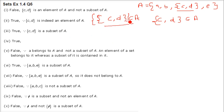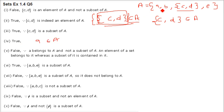Third: {{c, d}} ⊆ A — this is correct. When you take the element {c, d} out and put a brace, it becomes a subset. Fourth: a ∈ A — a is an element of A so it belongs. This is correct. Fifth: a ⊆ A — false, because a is an element here, not a set. To make it a subset, you would write {a} ⊆ A.